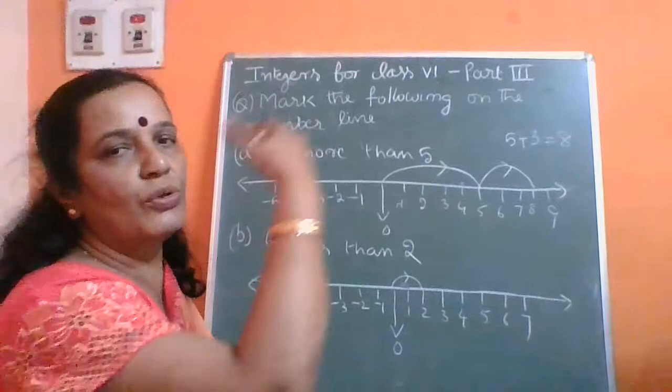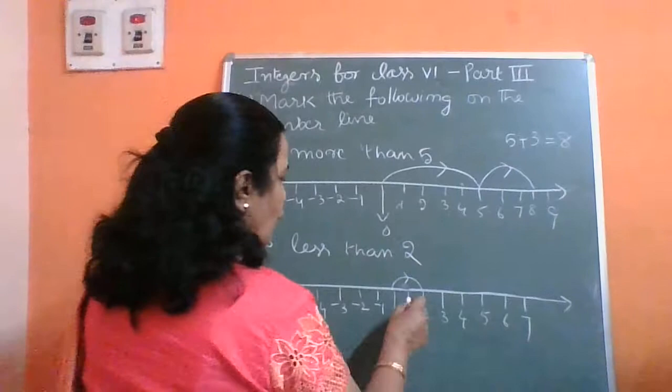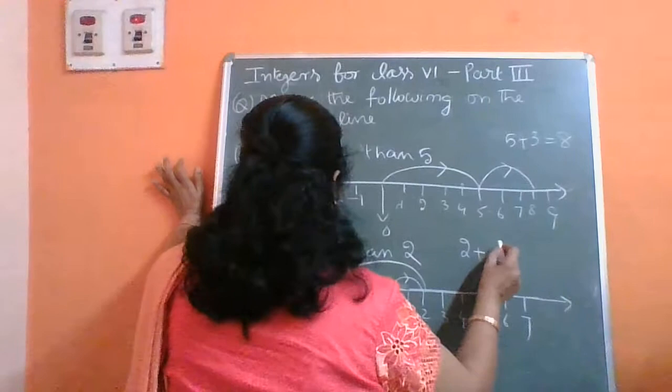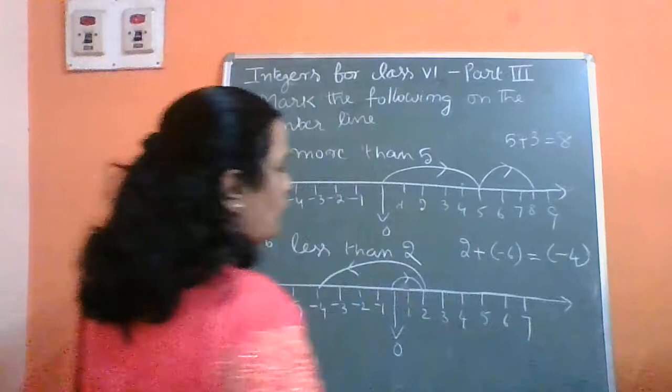More means you have to go to the right side and less means you have to come to the left side. Counting back 6 steps from 2: 1, 2, 3, 4, 5, 6 — you come to minus 4. That means 2 plus minus 6 equals minus 4.